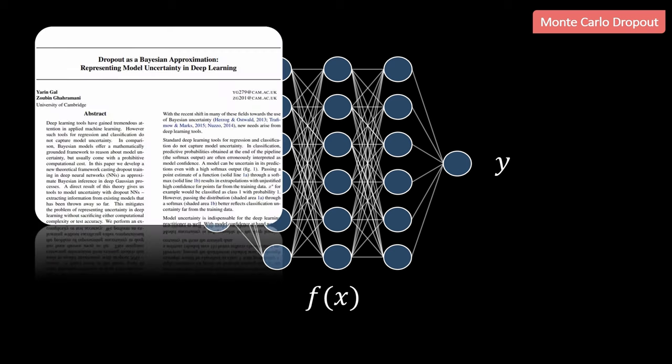In a paper from 2015 called dropout as Bayesian approximation it was shown that we can simply use dropout to approximate the results of Bayesian neural networks. This allows us to train the models more efficiently while still obtaining an estimate of the epistemic uncertainty.